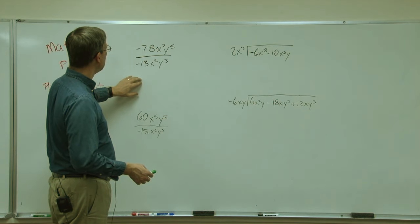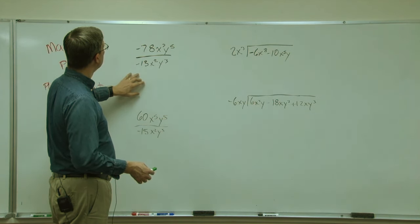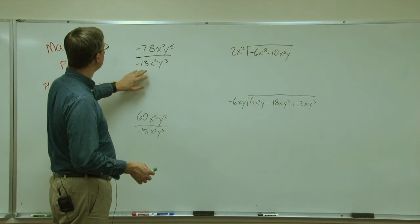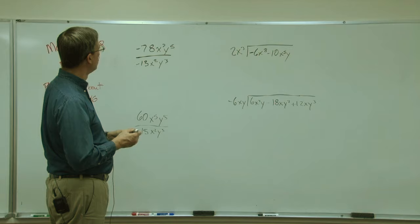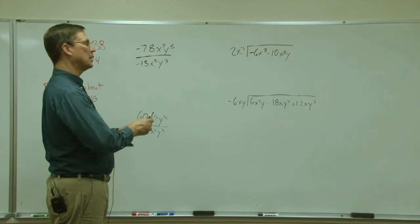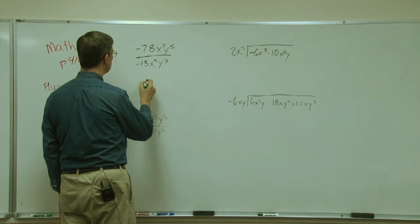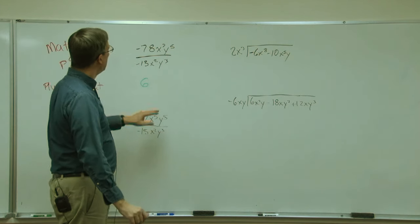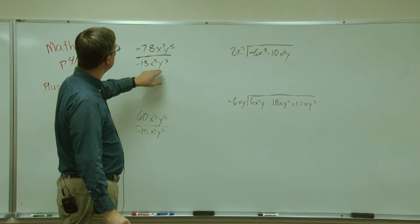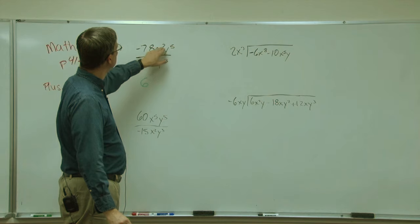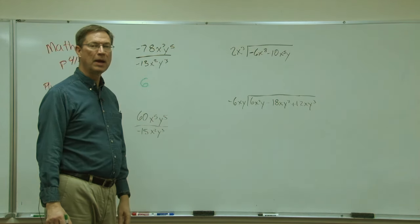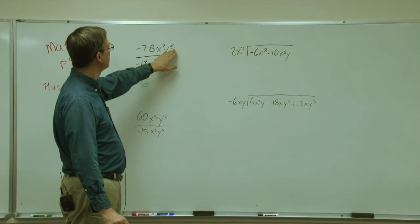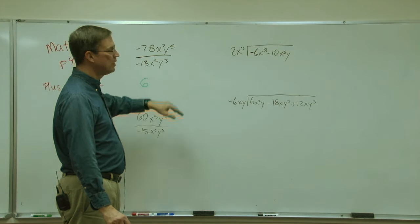We are going to get a positive answer. 78 divided by 13 is 6. But now what are we going to do with these exponents? We have x to the seventh power divided by x to the second power, and over here we have y to the fifth divided by y to the third.